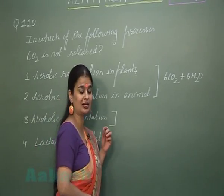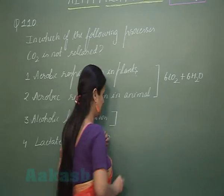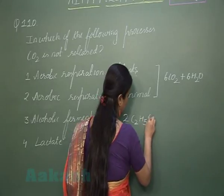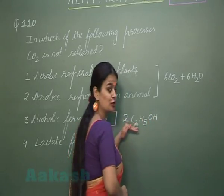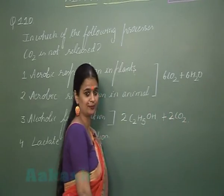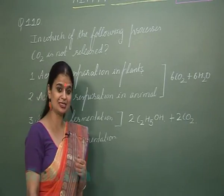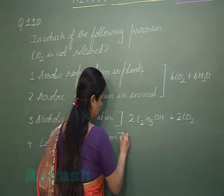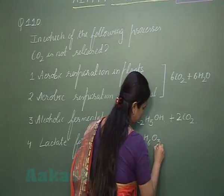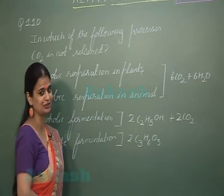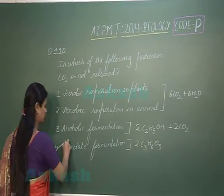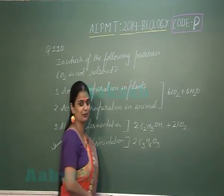In alcoholic fermentation, partial breakdown of food results in the formation of ethanol and carbon dioxide — one glucose molecule produces two molecules of ethanol plus carbon dioxide. In lactic acid fermentation, two molecules of lactic acid are produced, and carbon dioxide production is absent. So the right answer for question 110 is option number 4.